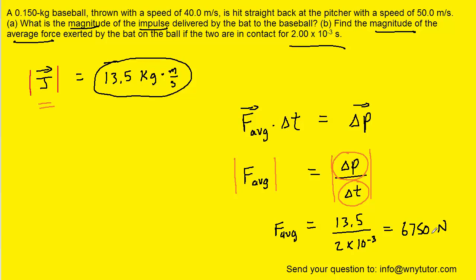Now your homework system might want you to express that as kilonewtons. So all you have to do is take the decimal point and move it over three places to the left, and that's going to give you 6.75 kilonewtons. And this would be the correct answer to part B of the question.